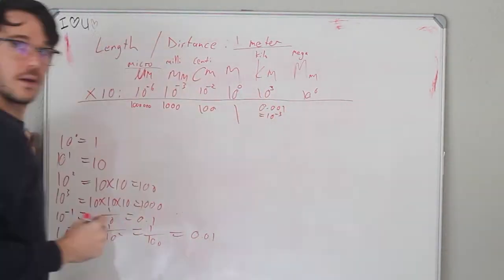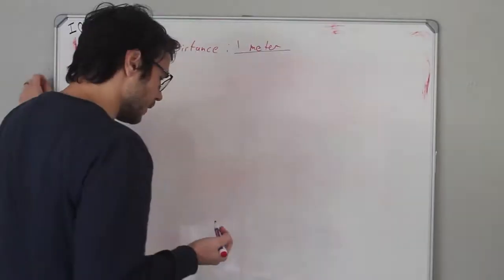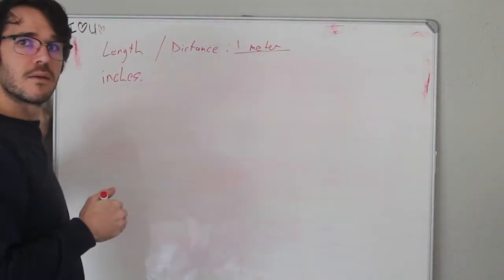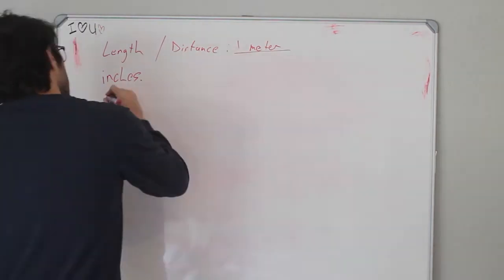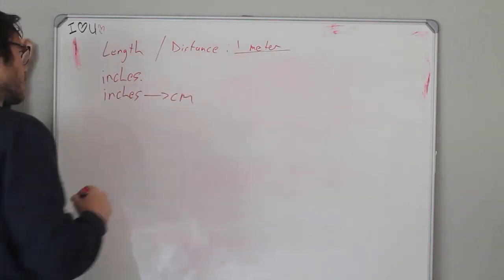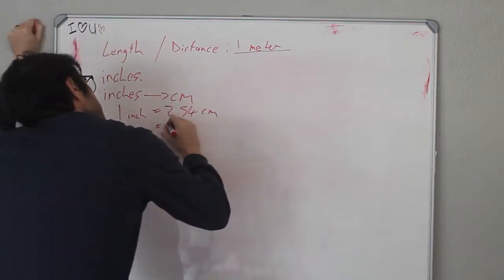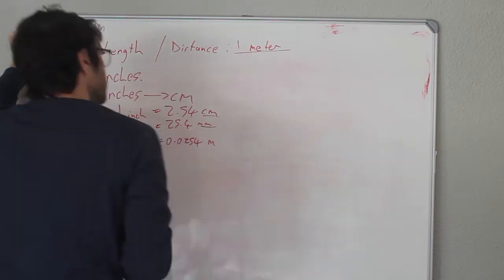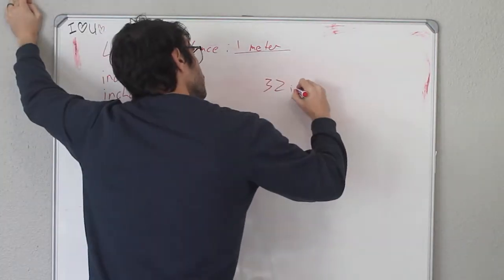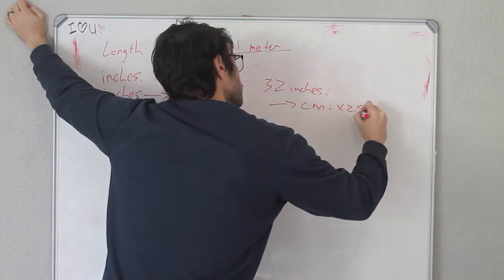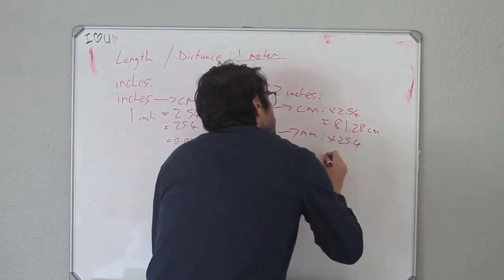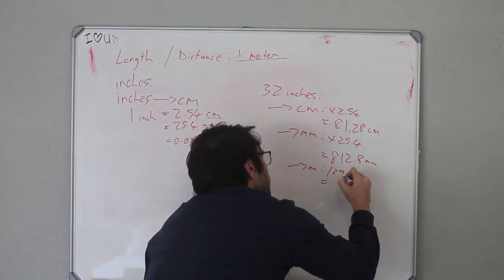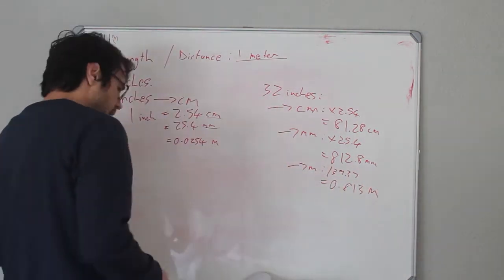However, when we're converting between inches and meters and feet and meters and yards and these other non-metric units, we have constants that we need to multiply and divide by. One inch is equal to 2.54 centimeters, or 25.4 millimeters, which means that we can find a constant with which to multiply or divide the values so that we can interchangeably convert between these different units. So a value like 32 inches can be converted to 81 centimeters, 812 millimeters, or 0.812 meters.